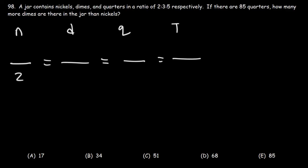So the ratio is 2 to 3 to 5, and then the sum total, 2 plus 3 plus 5 is 10. Let's say n is the number of nickels, d is for dimes, q is for quarters, and t is the total. Now we have the number of quarters, it's 85. So let's write that instead of q.